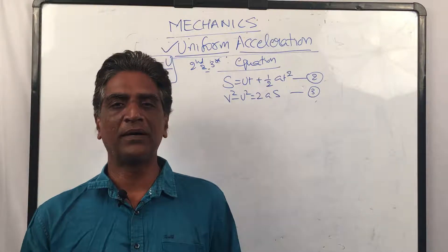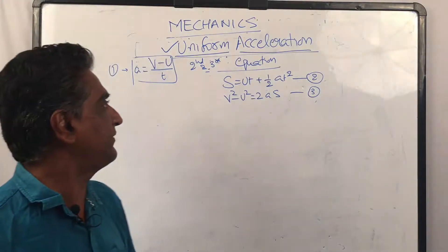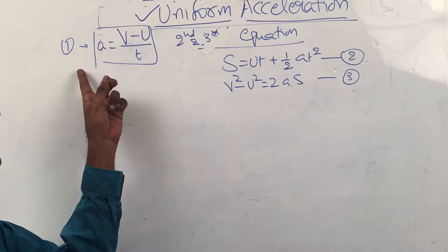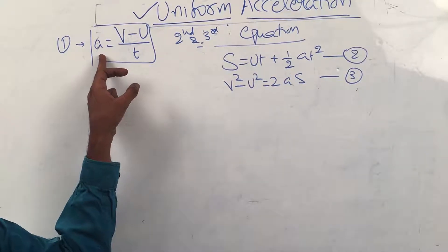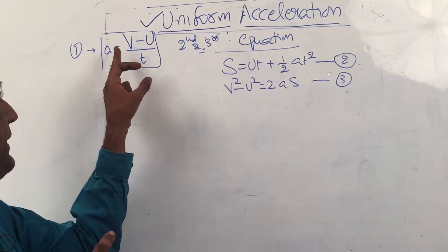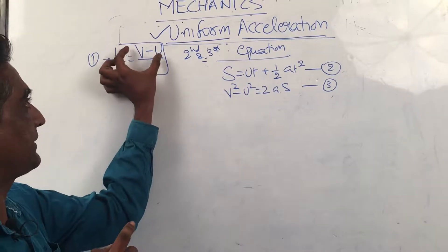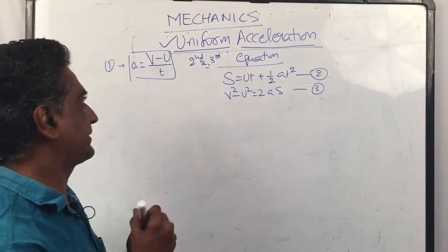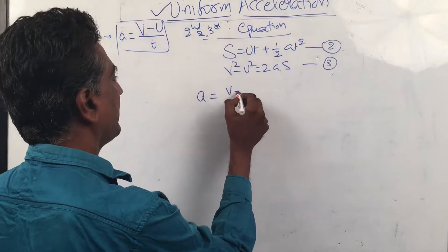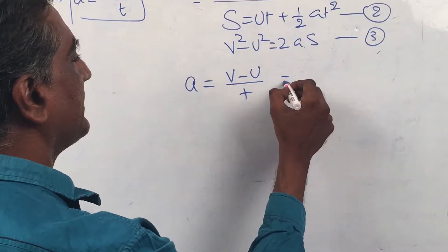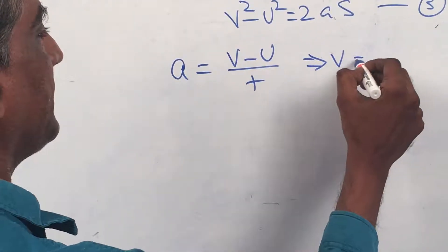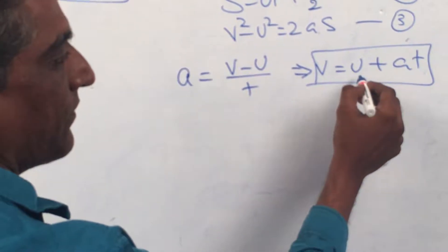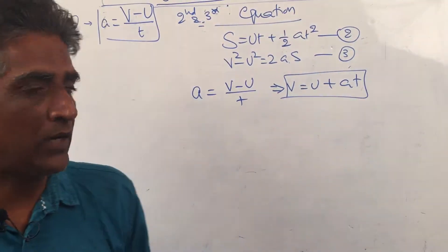Hello everybody, this is Narendra Kumar from Narendra Academy. Today we'll derive the second and third equations of motion. Last lesson we did the first equation: for uniform acceleration, the rate of change of velocity gives us a = (v - u) / t, which implies v = u + at.